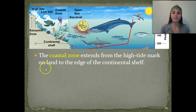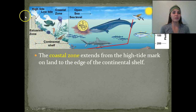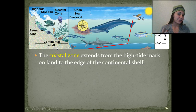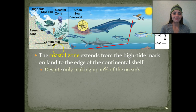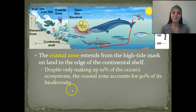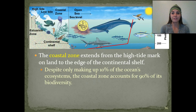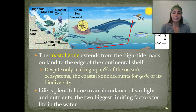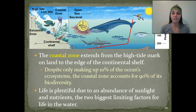First, we're going to discuss the coastal zone. This extends from the high tide mark on land to the edge of the continental shelf. Make sure you know all of these different zones because they will be on your exam. Despite only making up about 10% of the ocean's ecosystems, the coastal zone actually accounts for 90% of the biodiversity. Life is very plentiful here due to an abundance of sunlight and nutrients — the two biggest limiting factors of life in the water.